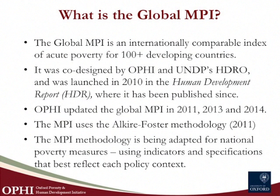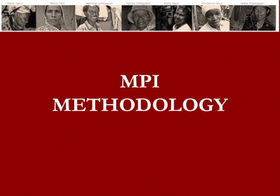The global MPI, or multidimensional poverty index, is an internationally comparable measure of acute poverty that has covered over 100 developing countries since it was launched in 2010 by the UNDP's Human Development Report Office and by OPHI, the Oxford Poverty and Human Development Initiative, and we co-designed it together. It is published by the Human Development Report Office in the HDRs, and has been updated every year that an HDR has been published. I'll go into the methodology, which draws on work I've done with James Foster, the author of the Foster-Greer-Thorbecke Index in unidimensional space.